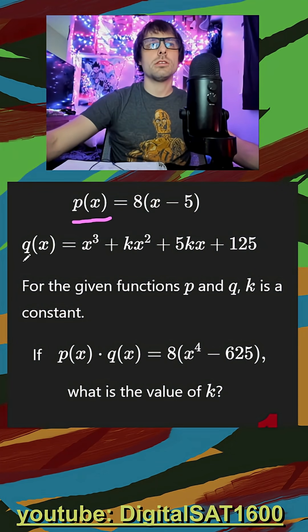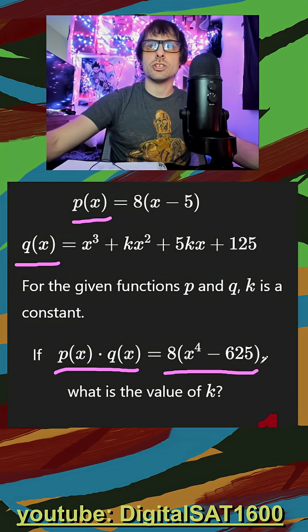I see a p of x function, I see a q of x function, and I see that if I multiply these two, it should get me this equation over here.